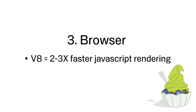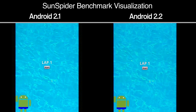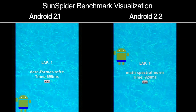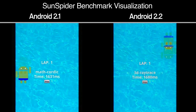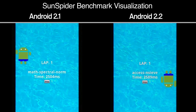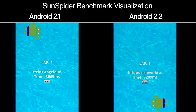Android 2.2 introduces the V8 JavaScript engine, which provides a 2 to 3x improvement in JavaScript rendering times compared to Android 2.1. You can see the difference in these side-by-side visualizations of the respective SunSpider JavaScript benchmarking test results.